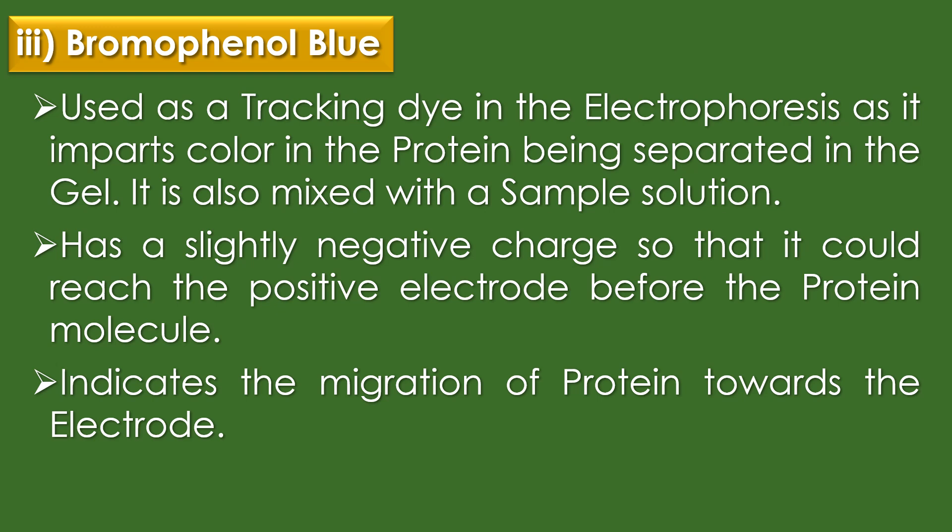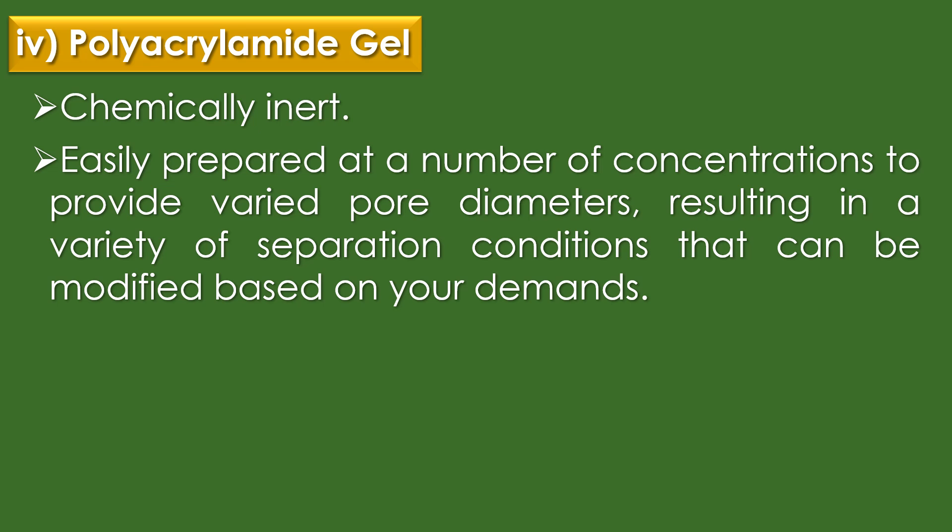The third reagent is bromophenol blue, used as a tracking dye in electrophoresis, as it imparts colour to the protein being separated in the gel. It is mixed with the sample solution. Bromophenol blue has a slightly negative charge so that it reaches the positive electrode before the protein molecules, indicating the migration of protein towards the electrode. The fourth reagent is polyacrylamide gel, which is chemically inert and can be prepared at various concentrations to provide different pore diameters, resulting in a variety of separation conditions that can be modified based on demand.